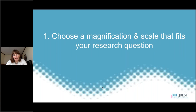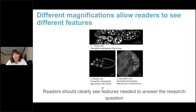The first step is to choose the magnification and scale that fits your research question. Different magnifications allow readers to see different features of your images. In this example, we have three different scales of the same image. The first shows ovary tissue of a Drosophila at the tissue scale. The second shows the cellular scale with an egg chamber within an oocyte. The third shows a subcellular scale with RNA granules in the epithelial cells. You need to choose the scale based on which features viewers need to see to understand your research question.